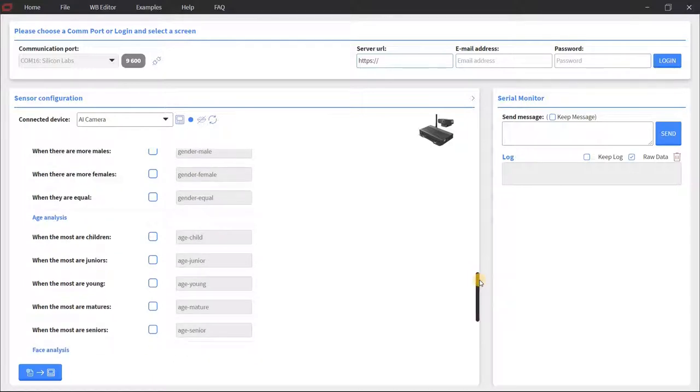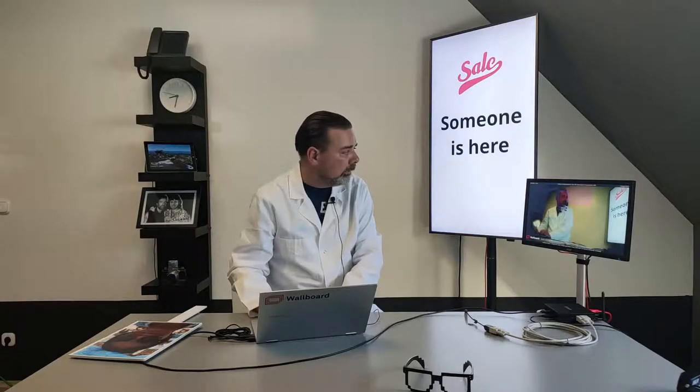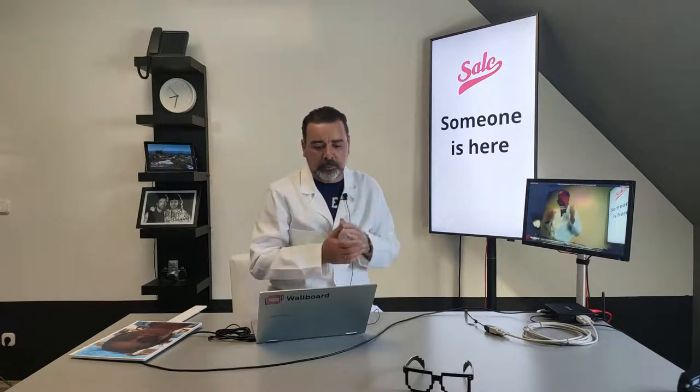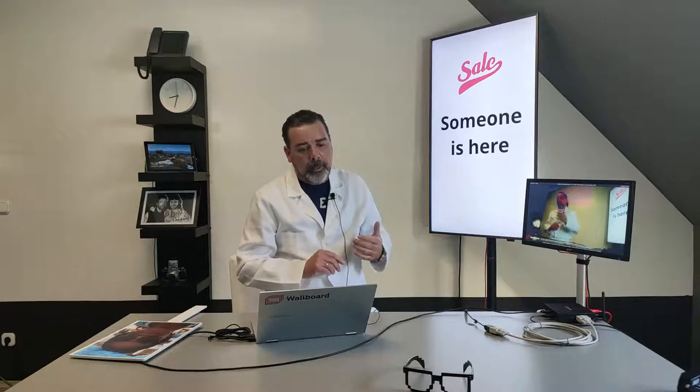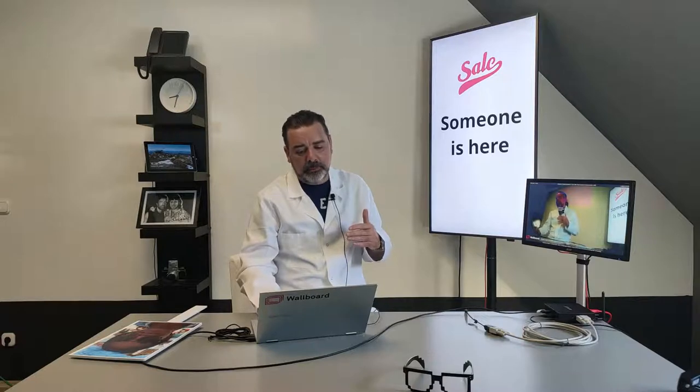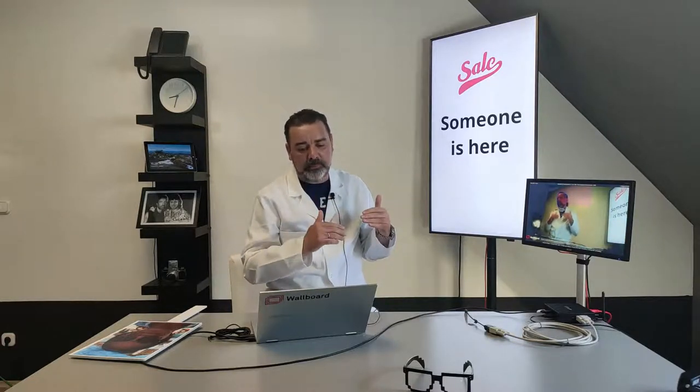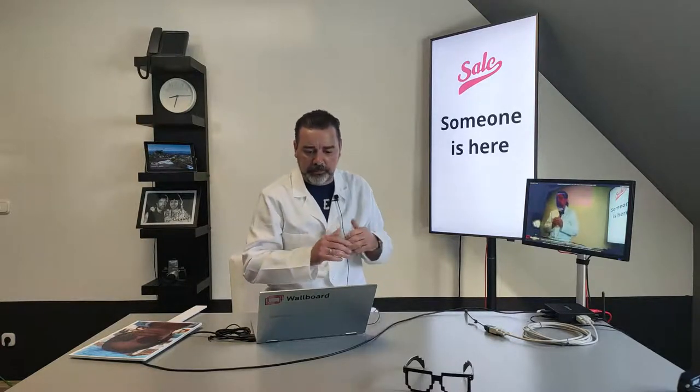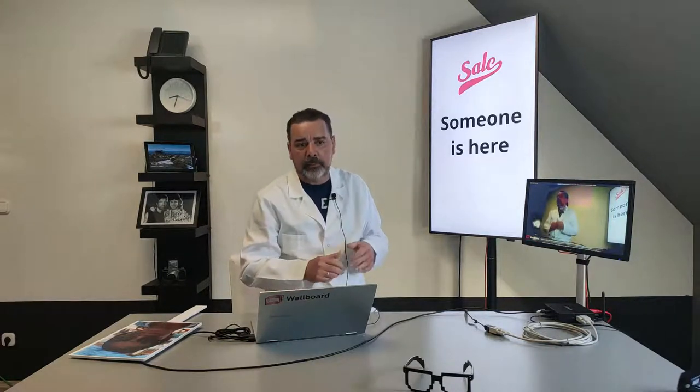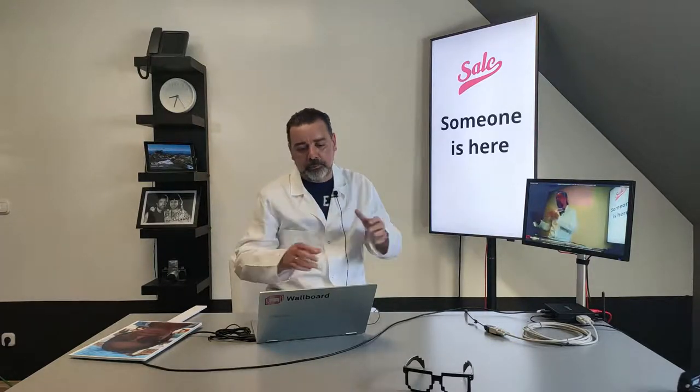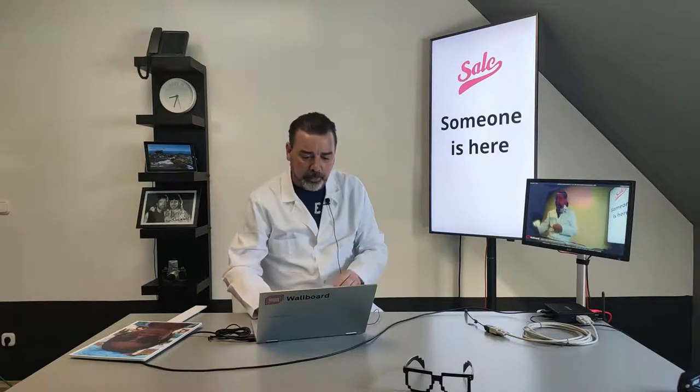The age analysis will send, we precisely know what is the calculated age of the person in front of the camera, but we just set five categories: children, juniors, young, mature and senior people. We will send just one message when the most faces in front of the camera are young, then we're gonna send that message. If they are mature, then we're gonna send that one. So in your content you can react, let's say we are displaying different content for children and different content for young people.